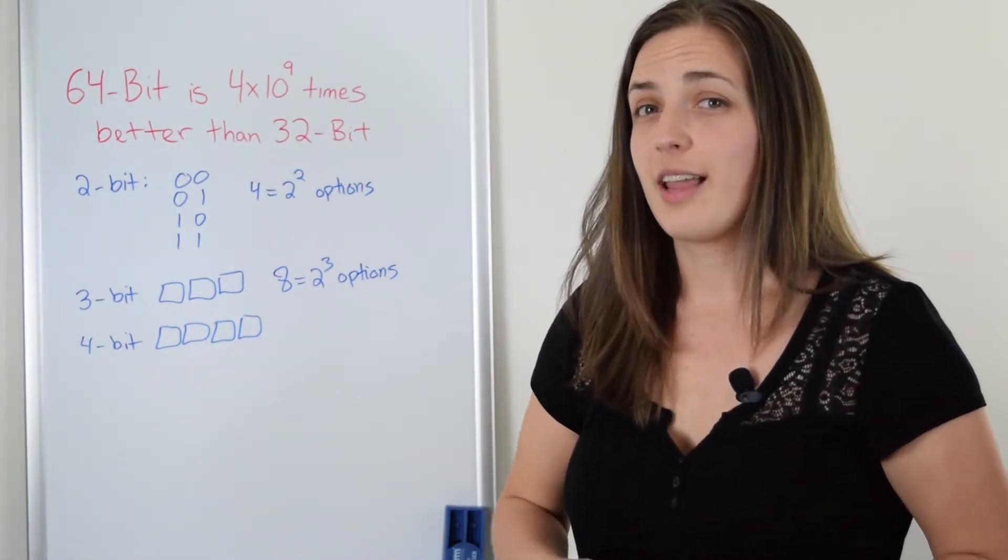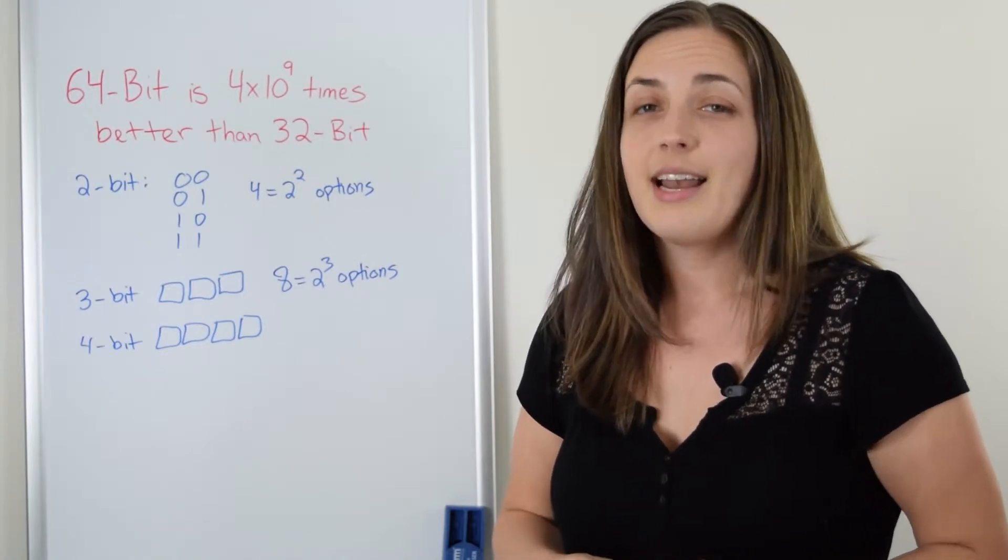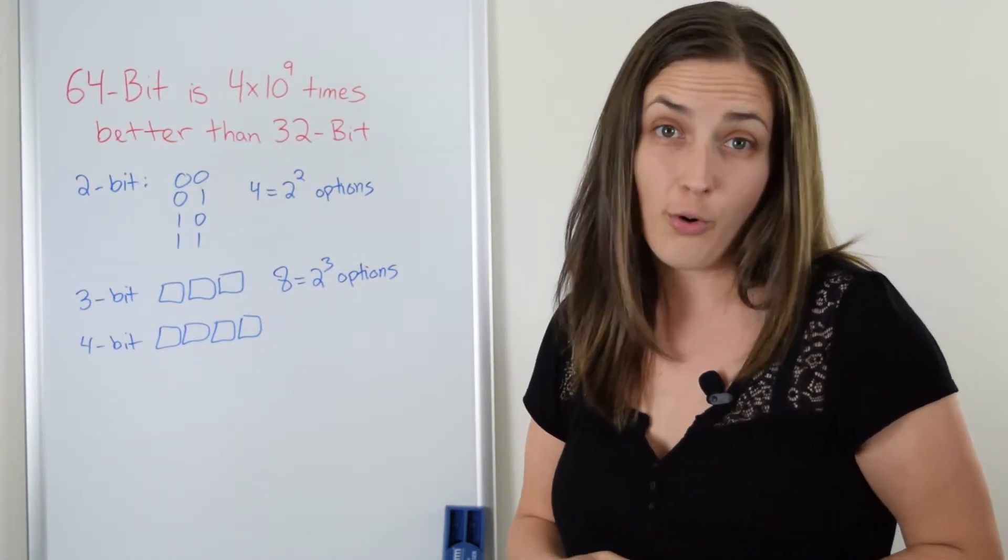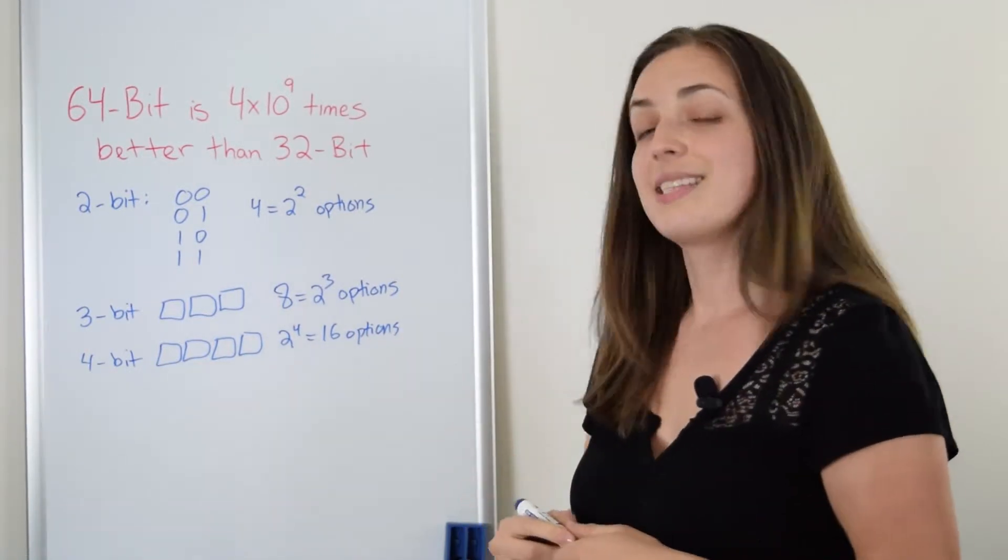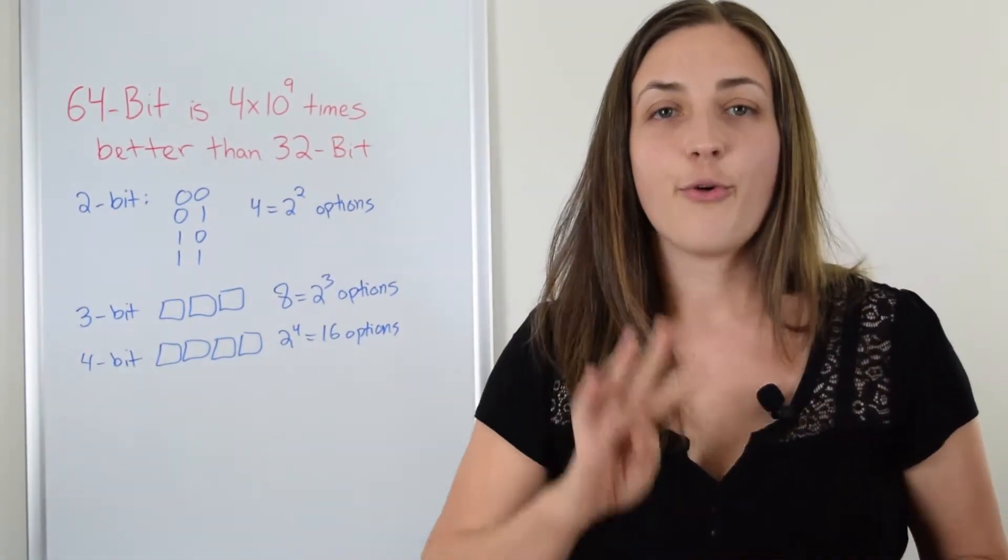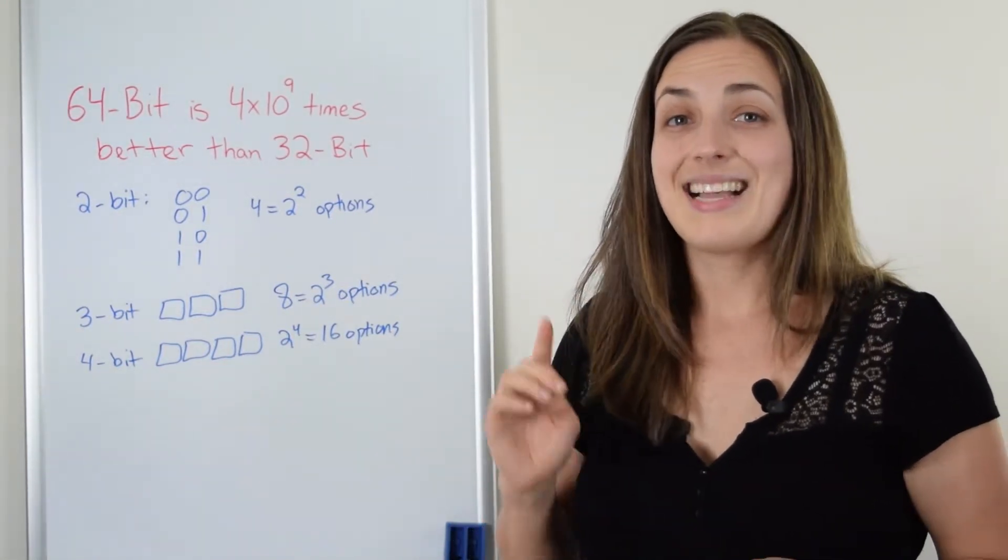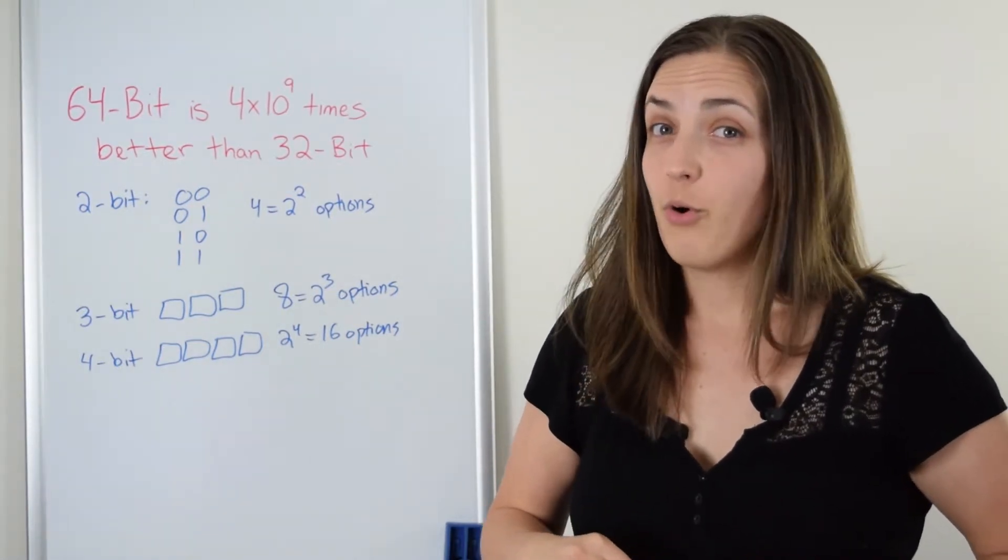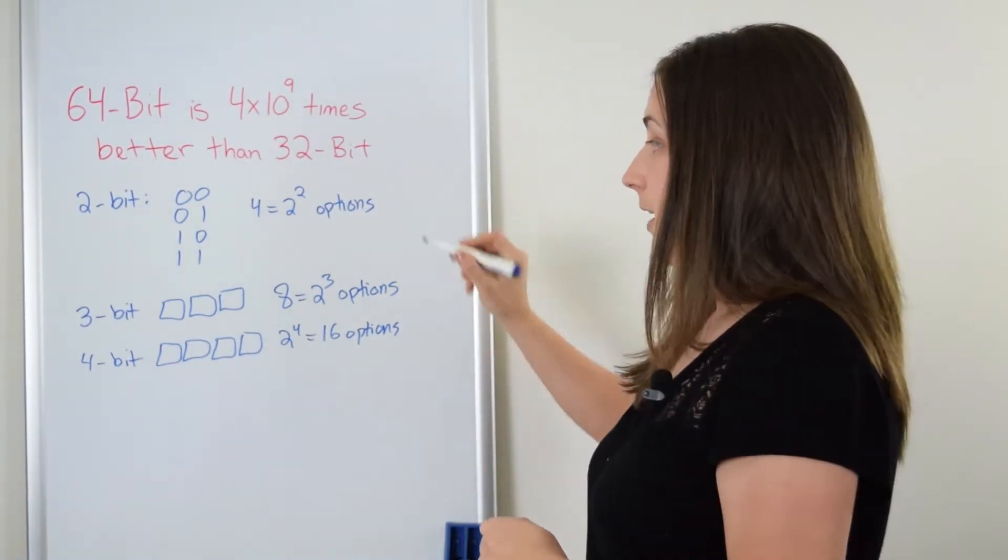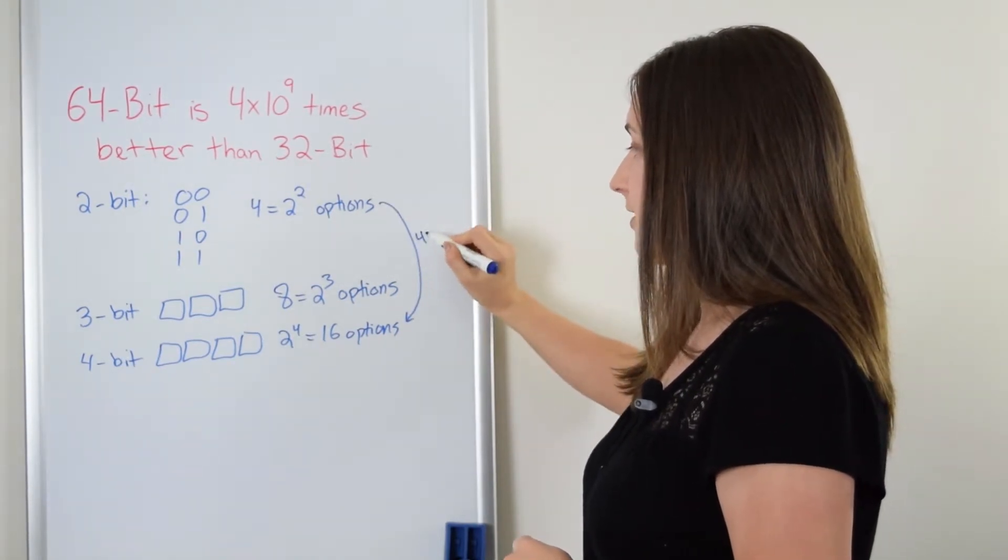In a four-bit system, we're allowed to use four bits and each bit can be a zero or a one. So we again have two to the power of four this time, which is 16 options. Now let's compare the four-bit system and the two-bit system. We can see that the four-bit system has 16 options, whereas the two-bit system had only four. So if we were comparing the two-bit and the four-bit, we would say that this one is four times better.